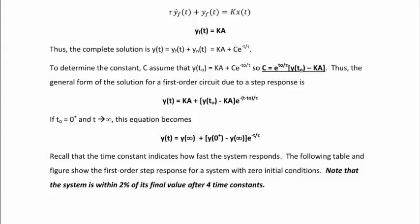Recall that the time constant indicates how fast the system responds. A table and figure show the first-order step response for a system with zero initial conditions. Within four time constants the response is within two percent of its final value, and within five time constants it is within one percent of its final value.